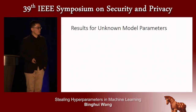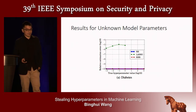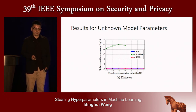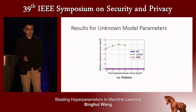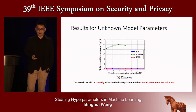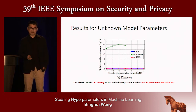The second result shows the case where model parameters are unknown to the attacker. Similarly, the x-axis is a range of hyperparameters and the y-axis is the relative estimation error. The y-axis values are all below negative 5, indicating our attack is also applicable even without known model parameters. This is because we first use a model extraction attack to steal the model parameters, and the model extraction attack can accurately steal them.